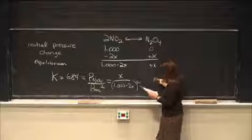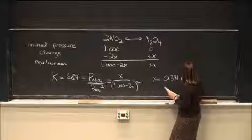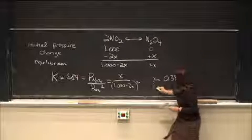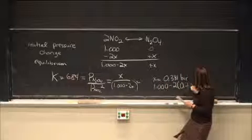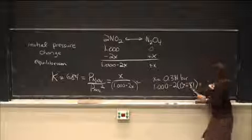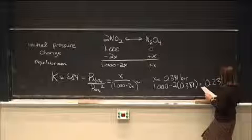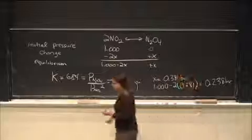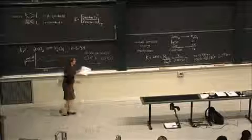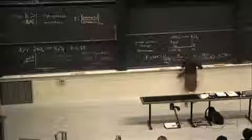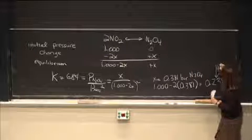So x, if you calculate it out, should equal 0.381 bar, and then if we do 1 minus 2 times 0.381 bar, we get 0.238 bar. So if we go back over here, our products at equilibrium—I guess I should write what—so x is our product and this is our reactant.